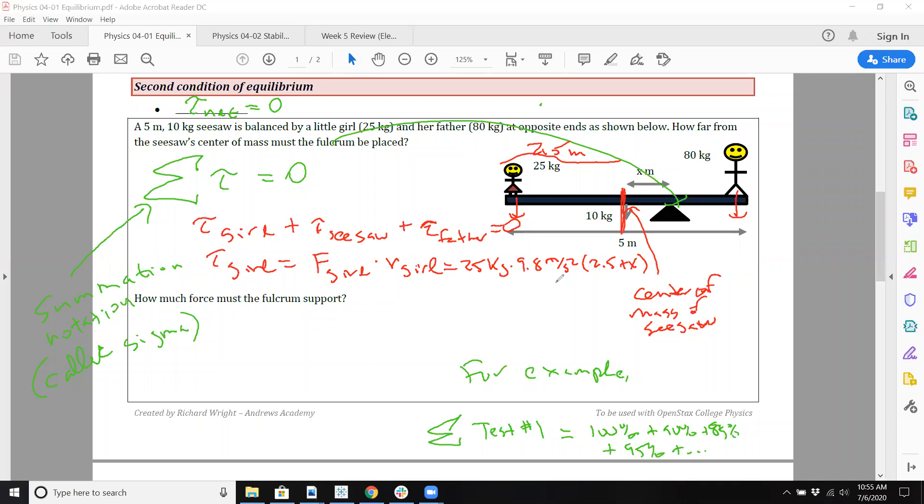And then her distance is going to be interesting - that's 2.5 meters, because this is the center right here, right? Plus x. So that's going to be her torque. The torque of the seesaw is going to be force of the seesaw, and the force, again, we're referring to the weight due to gravity because that's what's pulling down on it. That's the only force it experiences, just gravity, times the radius. In this case, it's going to be 10 kilograms times 9.8 meters per second squared, and then that's just times x because the center of the mass of the seesaw to the fulcrum is x.